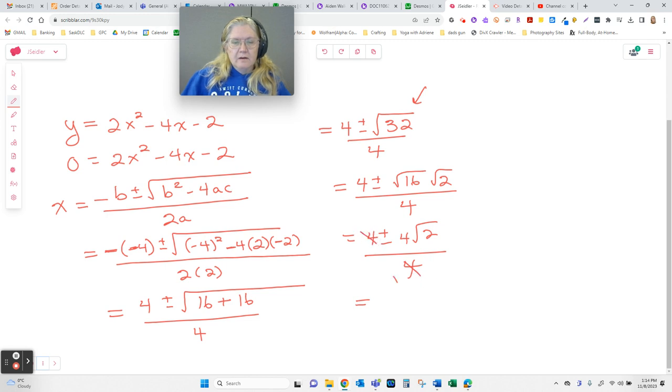Now, I've got 4s on every term. I can go 1, 1, 1. So, I have 1 plus or minus a single square root of 2. And over 1 doesn't do anything mathematically. So, I would stop there. Now, if they want an exact value, stop there. If they want a decimal,